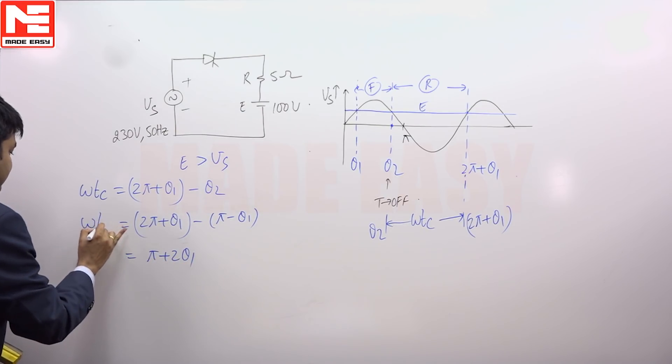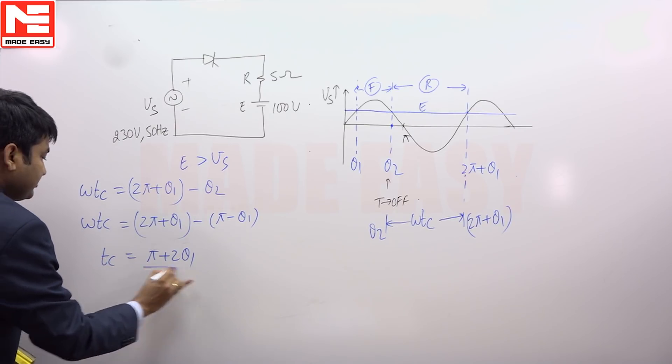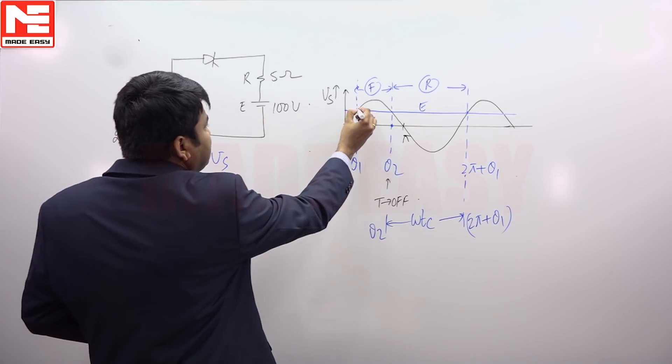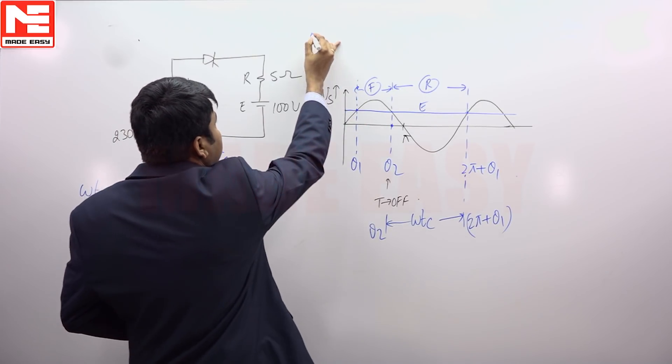So this is omega Tc. So circuit turn off time is pi plus 2 theta 1 by omega seconds. So theta 1, how to calculate this theta 1? At theta 1, supply voltage, battery voltage are equal.